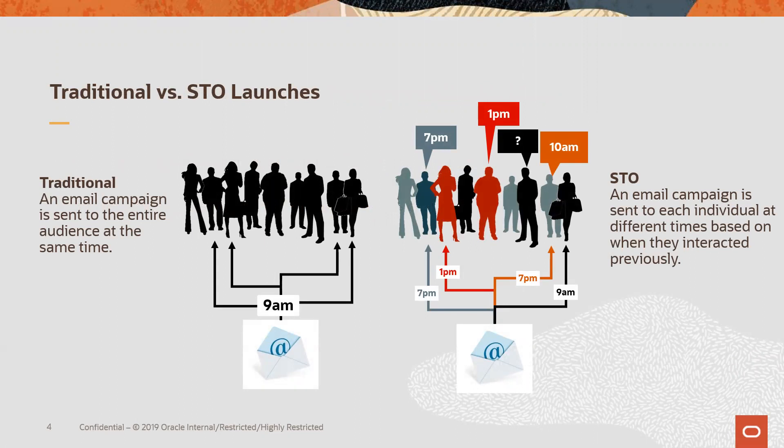Traditional campaigns are sent to the entire audience at a specific time where you hope for the best results. But with Send Time Optimization, the email campaign is sent to each individual at different times, based on when they've previously interacted.